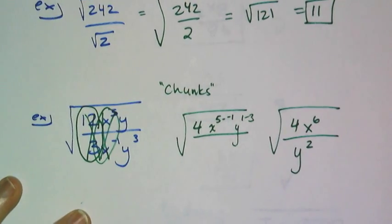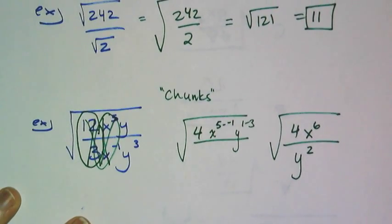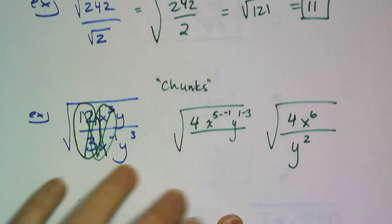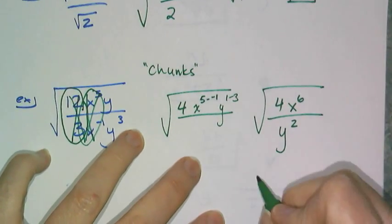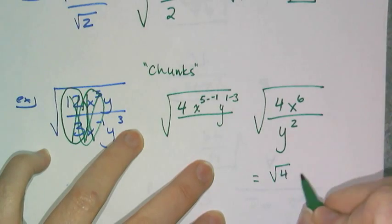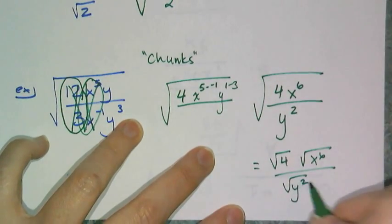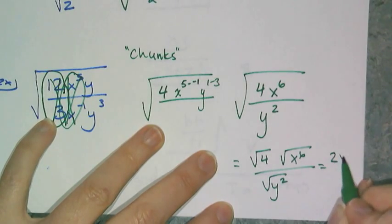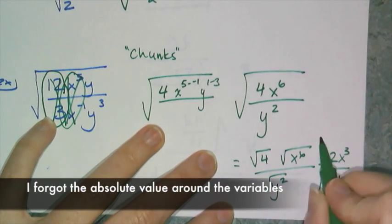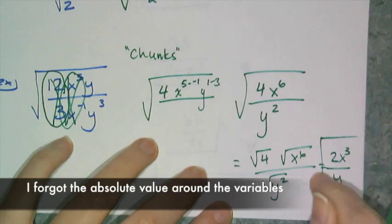And so I simplified the radical first, and now I can use my product and quotient rule to split this up into the square root of 4, square root of x to the sixth, square root of y squared, and then I get 2 x cubed over y. So it comes out clean with nothing left in the radical.